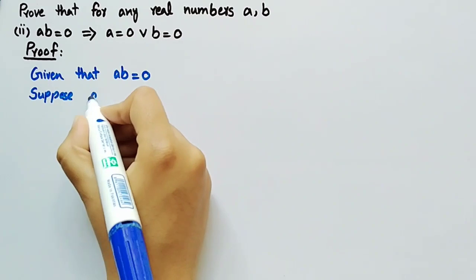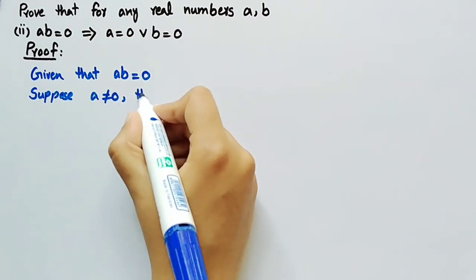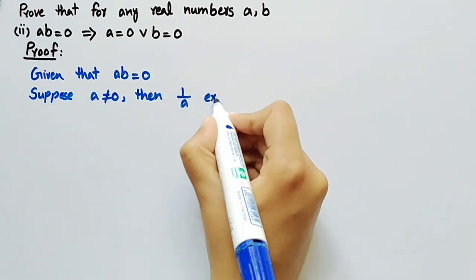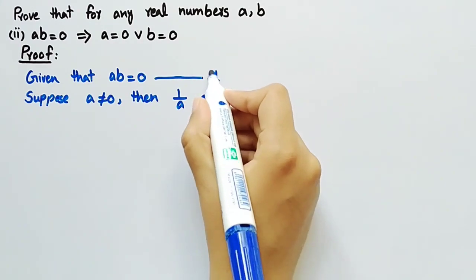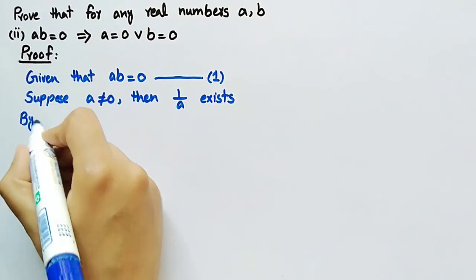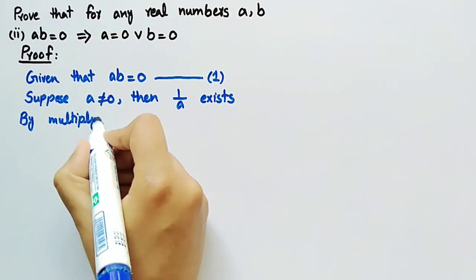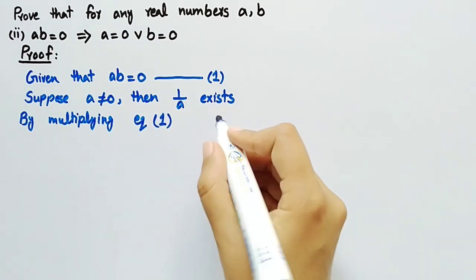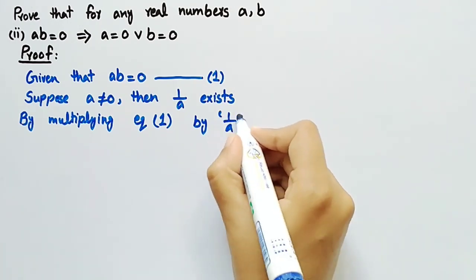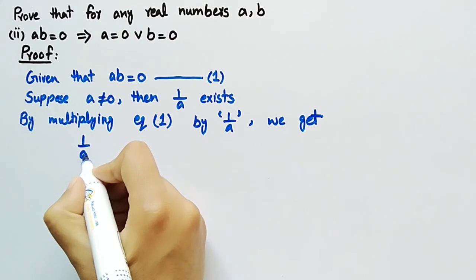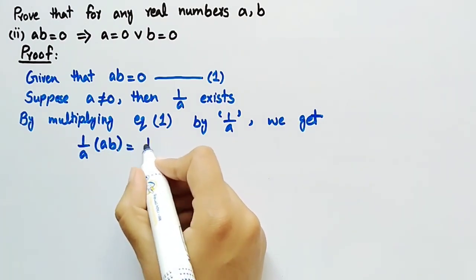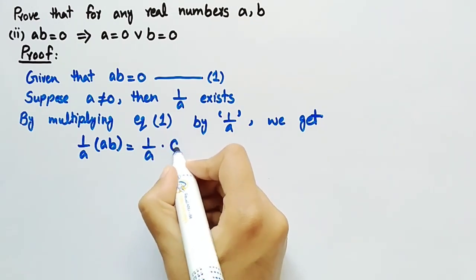Suppose a is not equal to 0, then 1/a exists. Since the inverse of every non-zero real number a exists and is of the form 1/a. Let this be named as equation number 1. Now, by multiplying equation 1 by 1/a, we get (1/a) multiplied by a·b equal to (1/a) multiplied by 0.